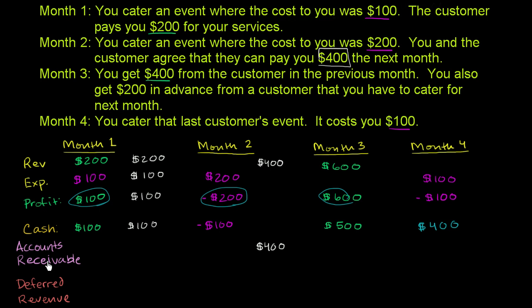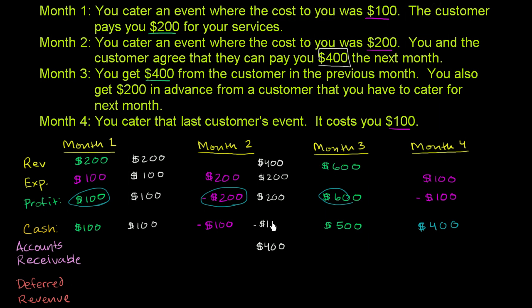When they pay you the $400, it goes from accounts receivable to cash. The cost to you was $200, so all of a sudden the revenues and expenses for that service are matched in that month, and your profit shows $200 — a better reflection of what you did that month. The reality is that you didn't get the cash for it and had to spend $200 of cash out of your pocket, so just like with cash accounting, you're still going to have negative $100 in cash.